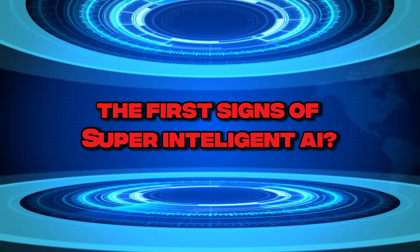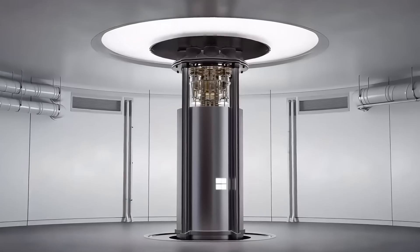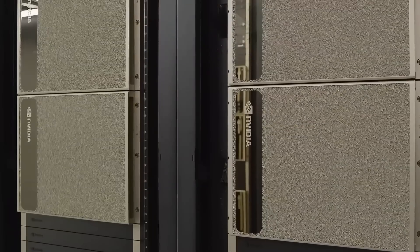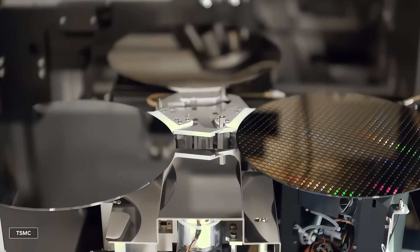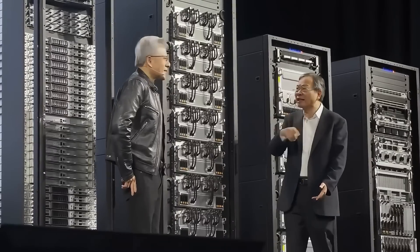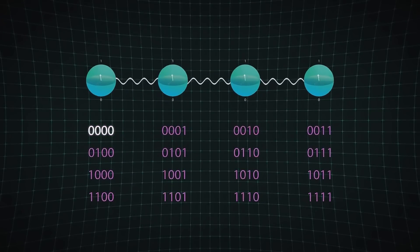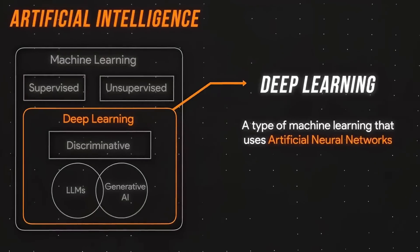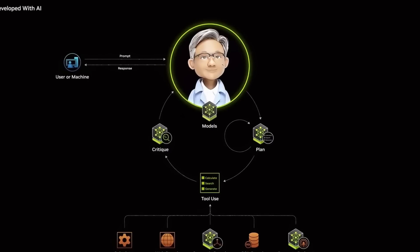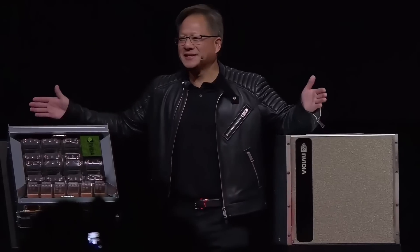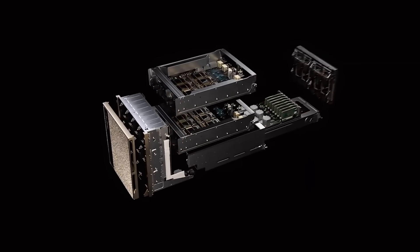The first signs of superintelligent AI. For decades, the idea of an AI that surpasses human intelligence has been confined to science fiction. But now, NVIDIA's fusion of quantum AI and deep learning is beginning to show signs of something extraordinary. AI that can solve problems in ways no human or classical machine ever could. Recent experiments using NVIDIA's EOS supercomputer and quantum-enhanced AI models have demonstrated ultra-advanced problem-solving capabilities.